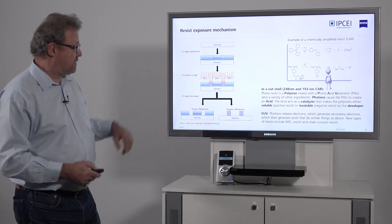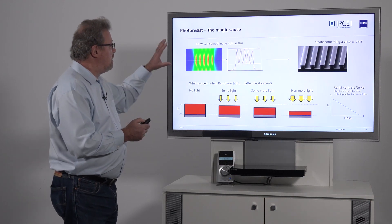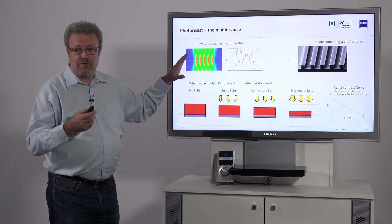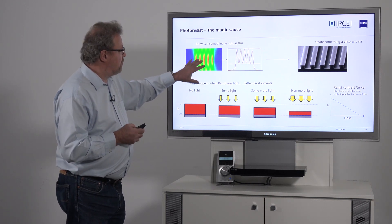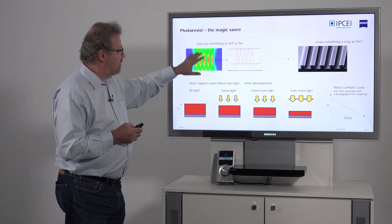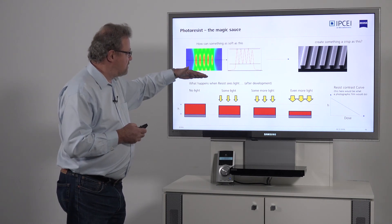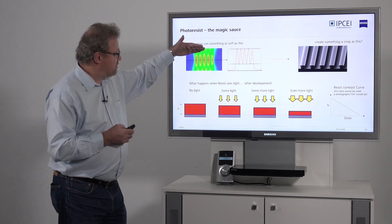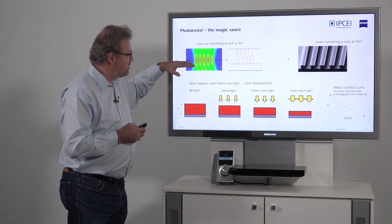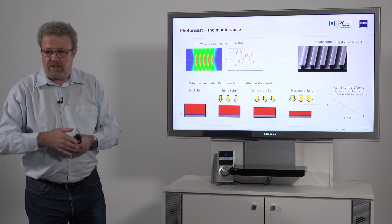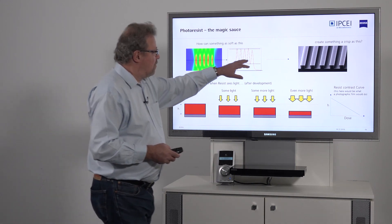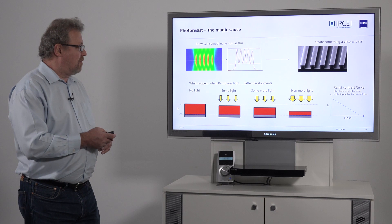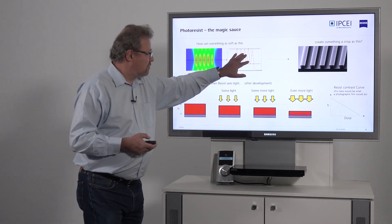That's all the chemistry I understand about this. One thing that, to my understanding, is much more important to understand, is why the resist is so important when you have an image of an object. What you see here is through-focus intensity distribution. Coming from out of focus, the image is not sharp, and then eventually somewhere you have a sharp image — but it's not really sharp, it's kind of like a sine wave. And once you've exposed it, the photoresist looks nice, crisp, and sharp. So how can that happen?